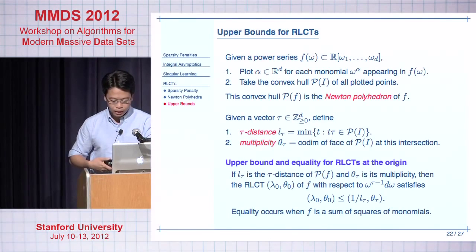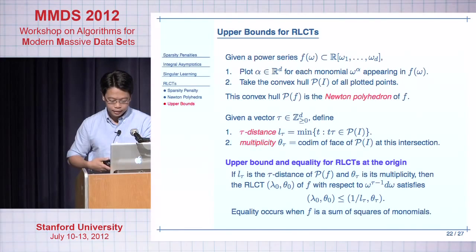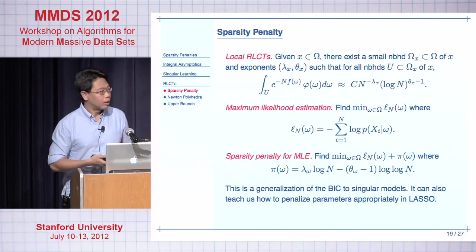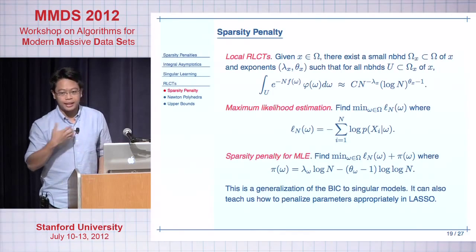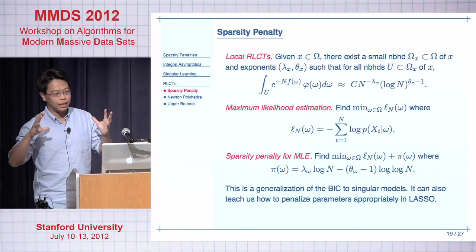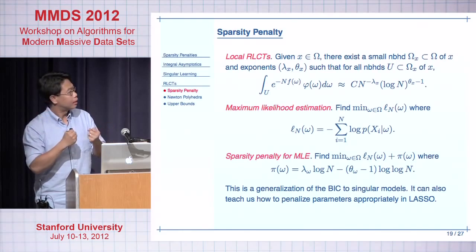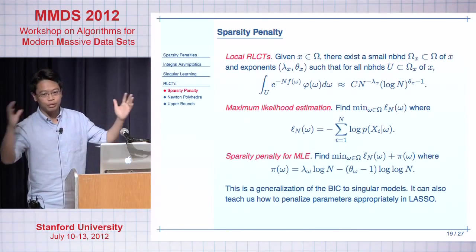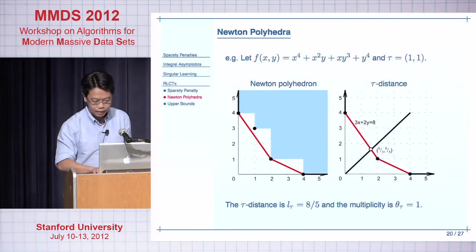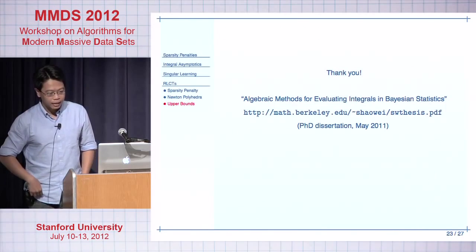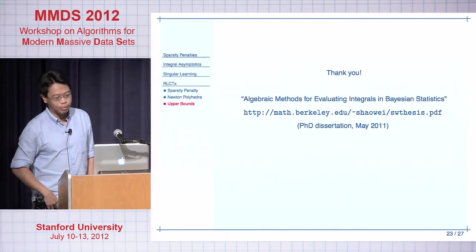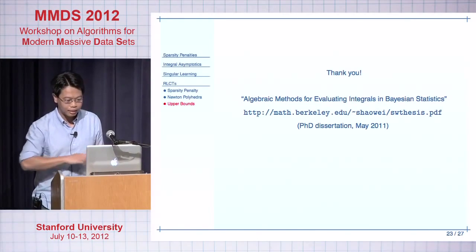To summarize: when studying machine learning models, many models are singular. It's very useful to study how singularities can be analyzed and desingularized in order to find out what happens when the sample size grows very large. With that, I'll end here. Thank you for your attention. For more information, you can read my thesis which I've put on my website. These are my references. Thank you.